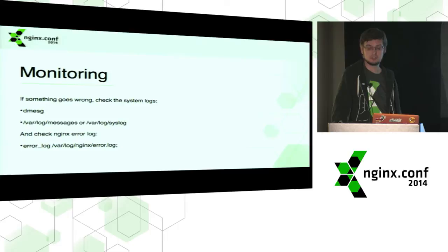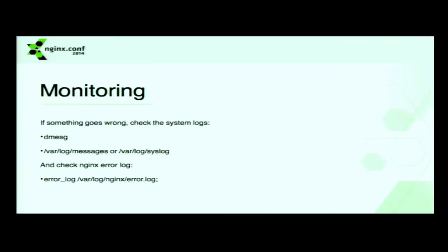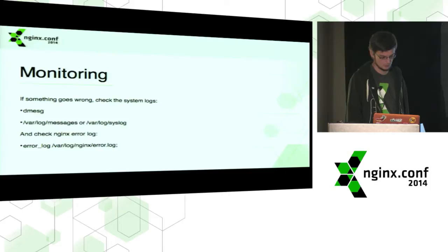Most of the time when I'm doing testing, something is wrong. Be sure to check the system logs — they will contain all the information your operating system has on errors. Check dmesg, /var/log/messages, or /var/log/syslog, or other files you know your system has. And of course, if there is a problem on the Nginx side, make sure to enable the error log and take a look at that file as well.